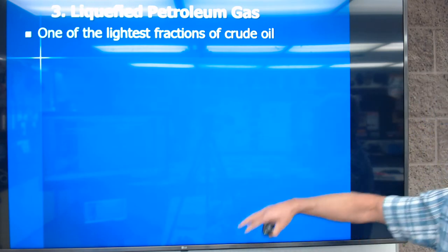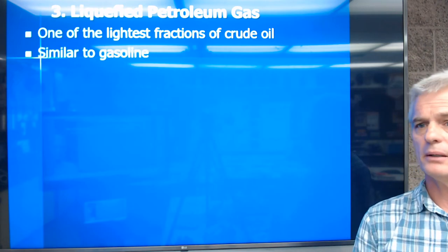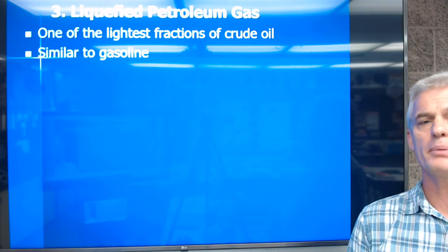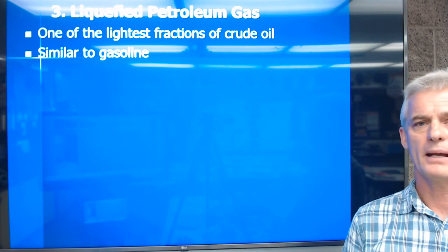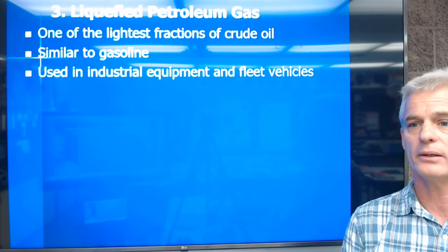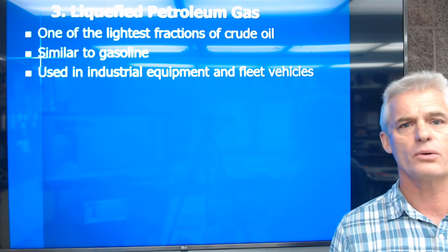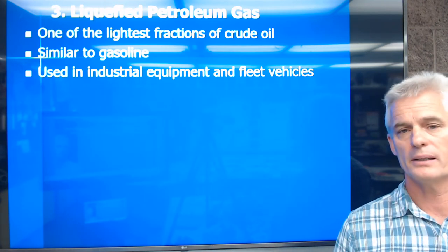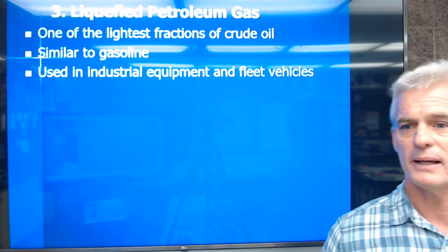LPG is one of the lightest fractions of crude oil — way up at the top of the fractioning tower. It burns extremely clean and is similar to gasoline, but at ambient temperature and pressure it is a gas, not a liquid like gasoline. We use it in industrial equipment and fleet vehicles — for example, indoor forklifts — because it burns really clean and its pollutants are not nearly as bad as gasoline.